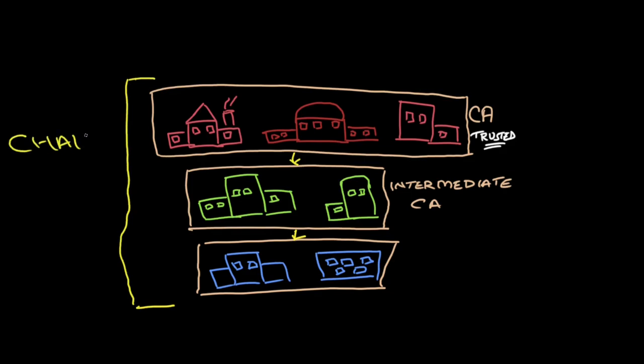If at any point the chain breaks, the trust is gone. This is the digital equivalent of the phrase, a friend of a friend is my friend.